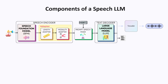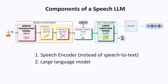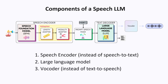The three components of a speech LLM are the speech encoder, the large language model, and the vocoder. You can think of the speech encoder as similar to speech-to-text, and the vocoder as similar to text-to-speech, but instead of passing around English words and sentences, all the information is represented in vectors passed into each of the models. The vocoder is sometimes missing in certain speech LLM papers — it's only needed if the output is speech, but if the output is text, the vocoder can be dropped.